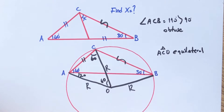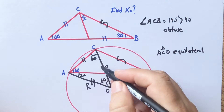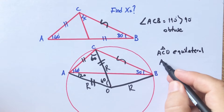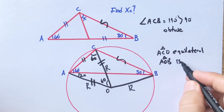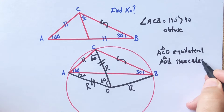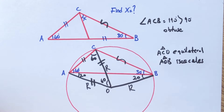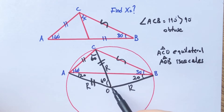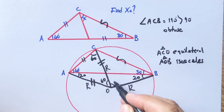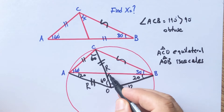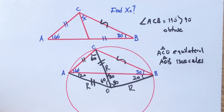So 20 degrees are left here, and this angle must be 60 degrees. Therefore AO equals OB, which means triangle AOB is isosceles. So here must be 20 degrees, here must be 80 degrees, and here is also 80 degrees.